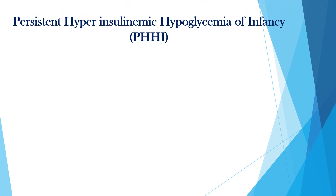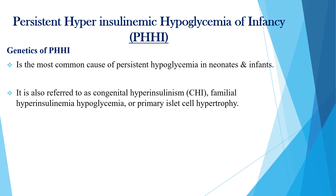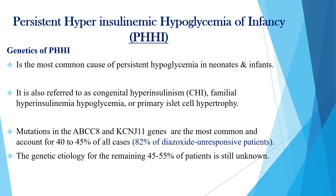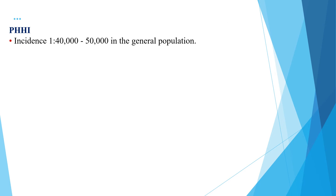Persistent hyperinsulinemic hypoglycemia of infancy (PHHI) is one of the most common causes of persistent hypoglycemia in neonates and infants. It is also referred to as congenital hyperinsulinism or familial hyperinsulinemic hypoglycemia or primary islet cell hypertrophy. Mutations in the ABCC8 and KCNJ11 genes are the most common, accounting for 40 to 45% of all cases. The genetic etiology for the remaining 45 to 55% of patients is still unknown. The disease is more common in consanguineous marriages, with an incidence in the general population ranging from 1 in 40,000 to 1 in 50,000.